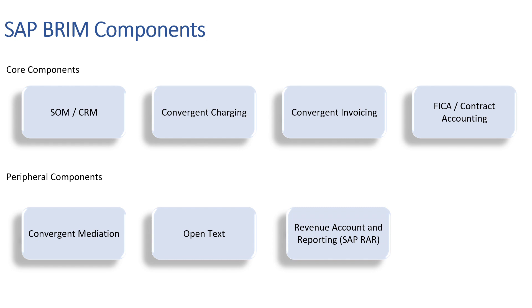Then we have SAP Revenue Accounting and Reporting, known as SAP RAR. It lets businesses manage their revenue and income recognition cycles in compliance with various accounting policies. The solution comes with many accounting standards and rules pre-configured and automated, for example ASC 606 or IFRS 15.